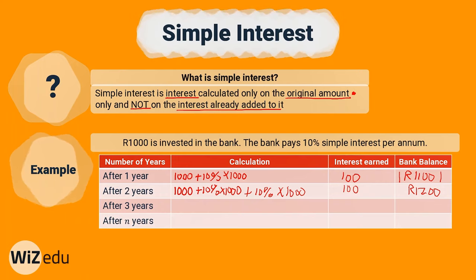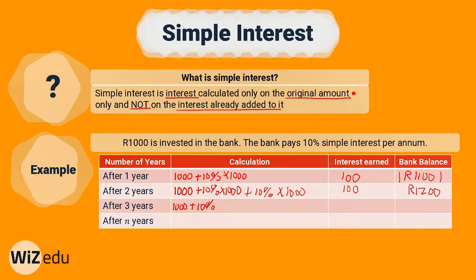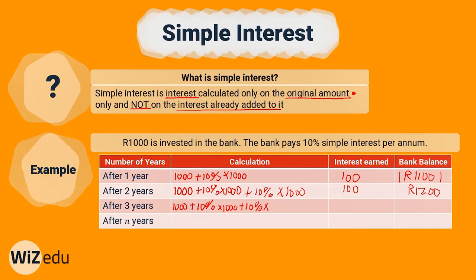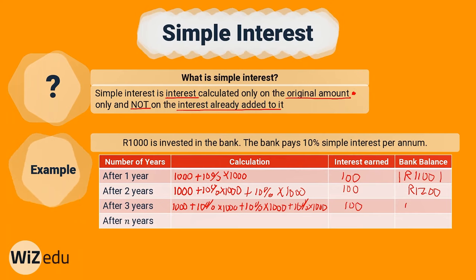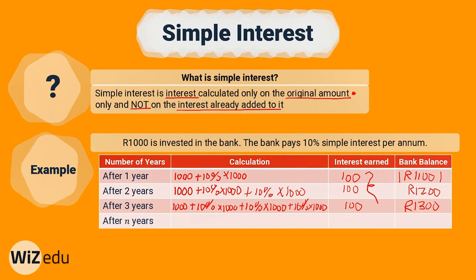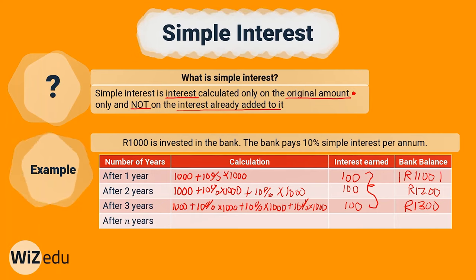We'd see something very similar in year three. We'd still have the 1,000 Rand initially invested, the 10% from year one, the 10% from year two, and also 10% of the original thousand in year three. So we'd earn again only 100 Rand in year three, bringing our bank balance to 1,300 Rand. Each year the interest we earn remains constant, because simple interest is only calculated on the original amount, and because that original amount never fluctuates, your interest earned remains the same.